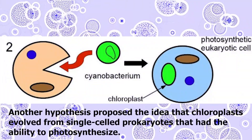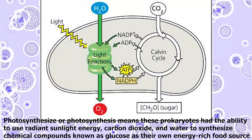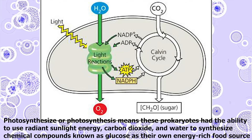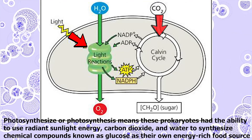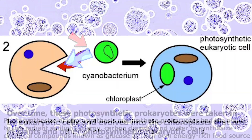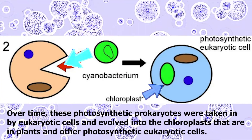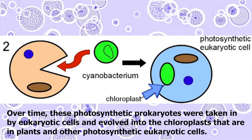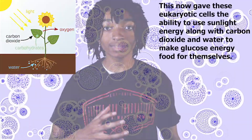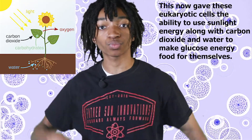Speaking of chloroplasts, let's talk about them next. Another hypothesis proposes that chloroplasts arose from single-celled prokaryotes that have the ability to photosynthesize. Photosynthesis means these prokaryotes have the ability to use radiant sunlight energy, carbon dioxide, and water to synthesize chemical compounds known as glucose as their own energy-rich food source. Over time, these photosynthetic prokaryotes were taken in by eukaryotic cells and evolved into the chloroplasts that are in plants and other photosynthetic eukaryotic cells, giving these cells the ability to use sunlight, carbon dioxide, and water to make glucose energy for themselves.